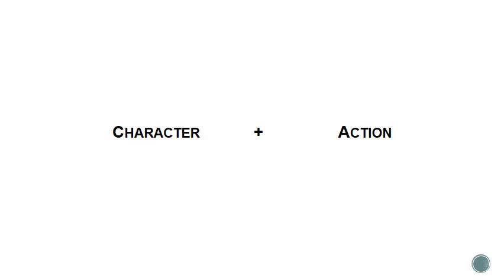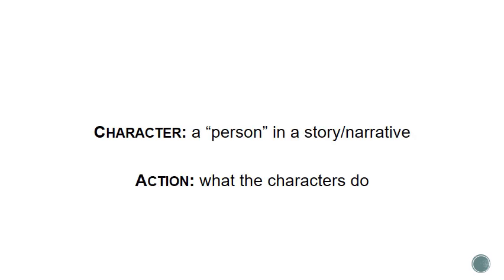Now the counterpart to subject and predicate — or subject and verb — is character and action. Subject and predicate are grammatical terms. Character and action are storytelling terms. And even if you are writing about something factual, like a scientific experiment, you're still telling a story. The character is the person in the story or narrative — it doesn't have to be a literal flesh-and-blood person; it can be an institution, a building, a place. And the action is what the characters are doing.